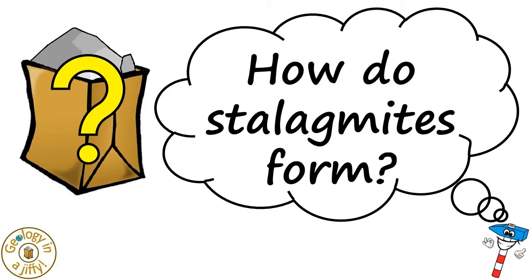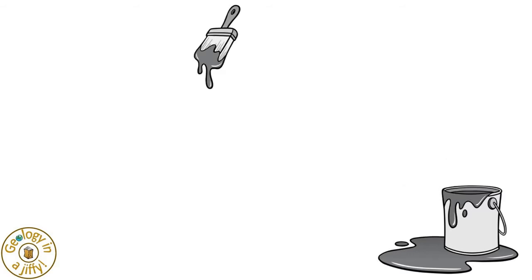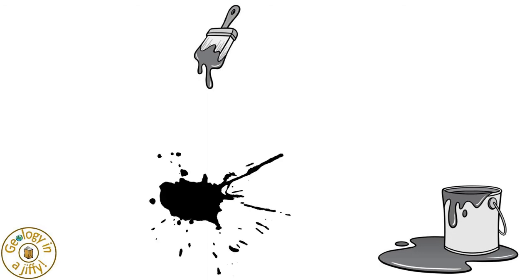How do stalagmites form? To model how a stalagmite forms, imagine a pot of black paint. If we then take the paint brush covered in paint and hold it above the floor, the paint will start to drip off the brush and splat on the floor. The splat is the stalagmite forming.